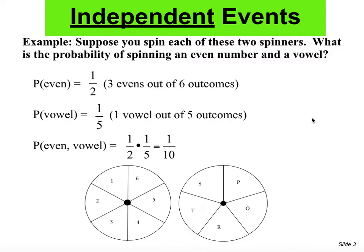Let me give you a specific example. Suppose you spin each of these two spinners. What is the probability of spinning an even number and a vowel? The two spinners are two different things — one has numbers, the other has letters. The probability of getting an even number with the spinner numbered one through six is three out of six, because the even numbers are two, four, and six. In the other spinner, the probability of getting a vowel letter is one out of five, because there is only one vowel and the spinner is divided into five parts.